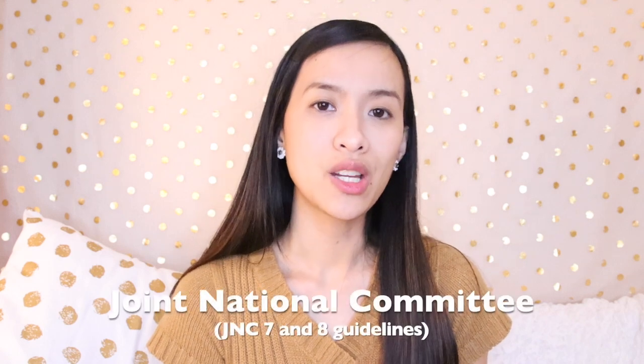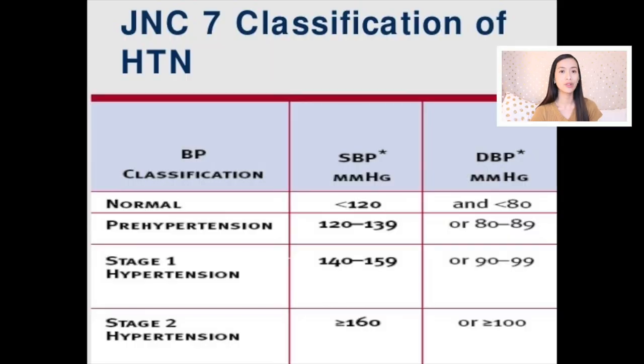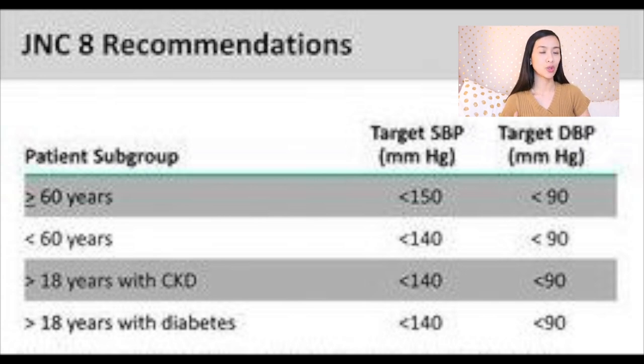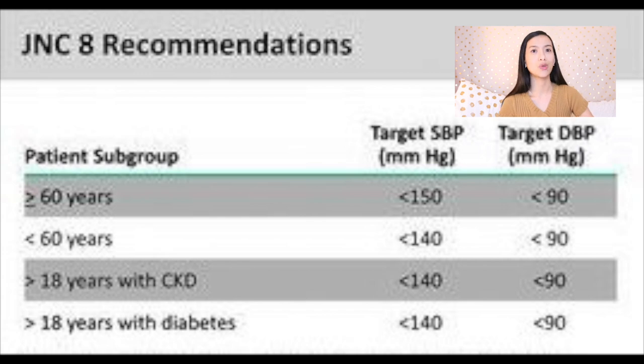For diagnosis there are guidelines to follow: the Joint National Committee JNC 7 and JNC 8. JNC 7 has classifications — normal is 120 over 80 — but does not have treatment recommendations. JNC 8, on the other hand, has treatment recommendations and is a little easier to remember.